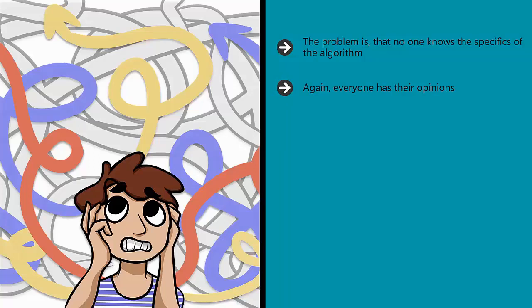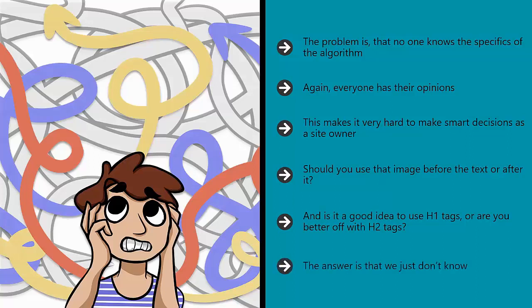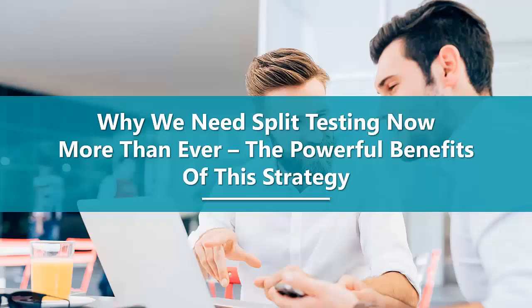Again, everyone has their opinions. This makes it very hard to make smart decisions as a site owner. Do you include more keywords in your articles or not? Should you use that image before the text or after it? And is it a good idea to use H1 tags or are you better off with H2 tags? The answer is that we just don't know, and for that reason the best option is to run A/B tests — the other term for split tests — in order to see which changes positively affect your search ranking and which do not.